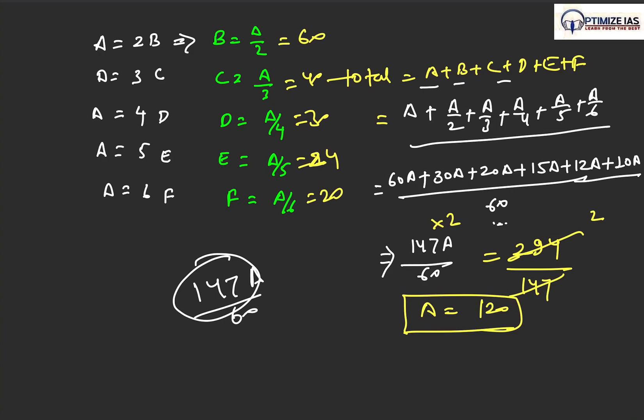That means if we put the value as 294, we get A as 120, and this A equals 120 satisfies all our conditions here, here, here, here. Each one gives us even number. This is how you solve the problem.